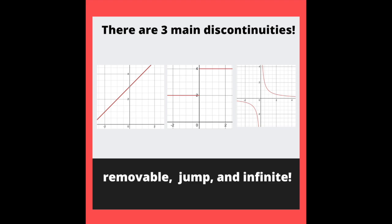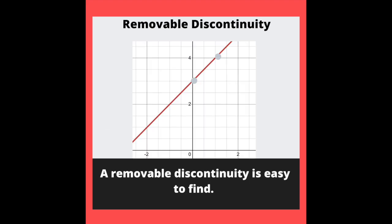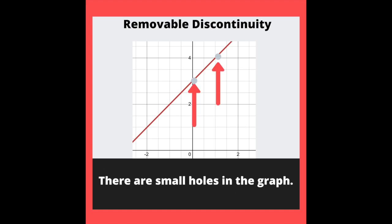There are three main discontinuities: removable, jump, and infinite. A removable discontinuity is easy to find - there are small holes